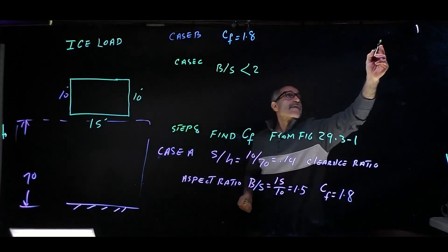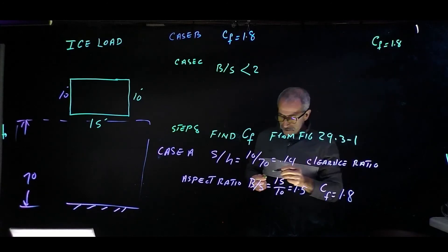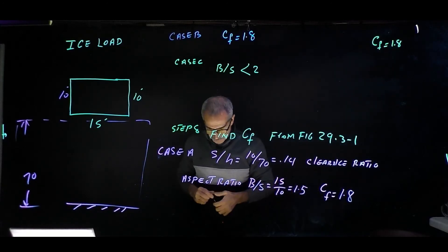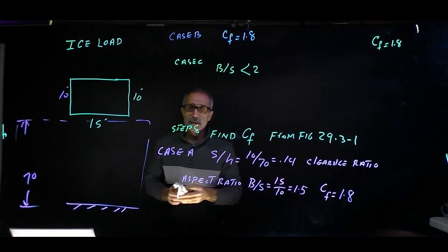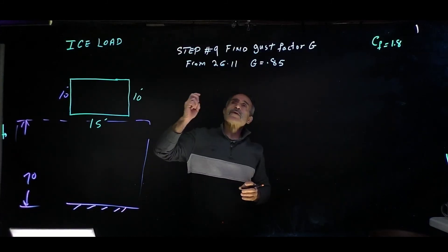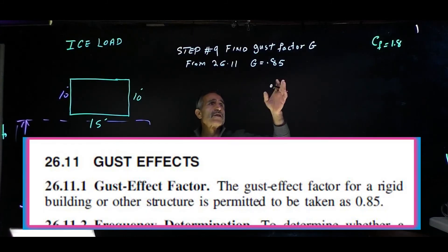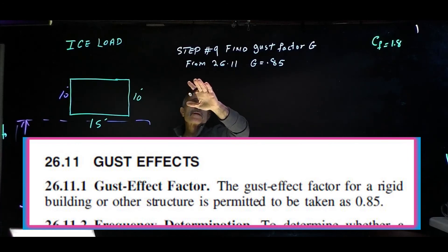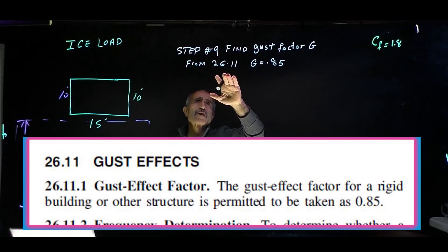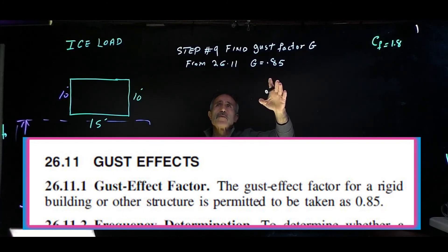Step nine: find the gust factor G. From Section 26.11, G = 0.85.